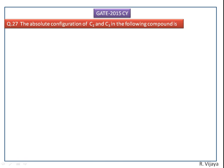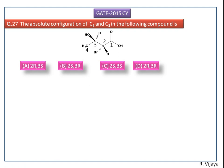The absolute configuration of C2 and C3 in the following compound is to be determined. This compound has two chiral carbon centers.